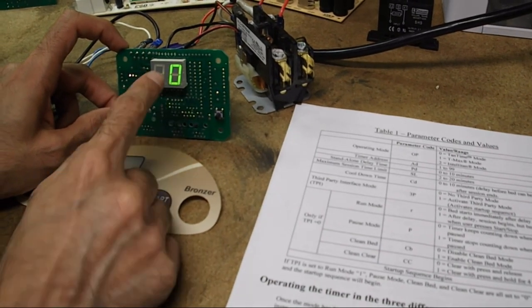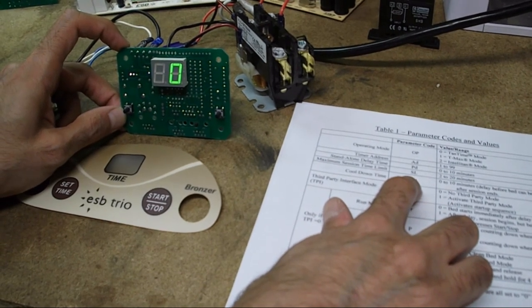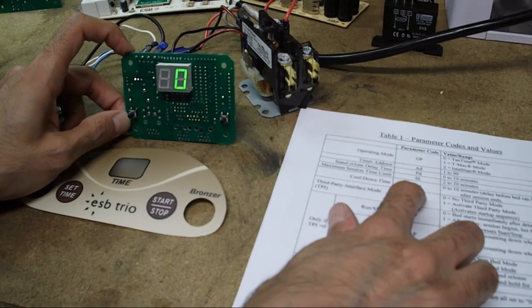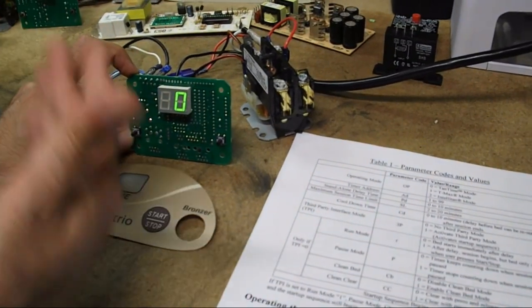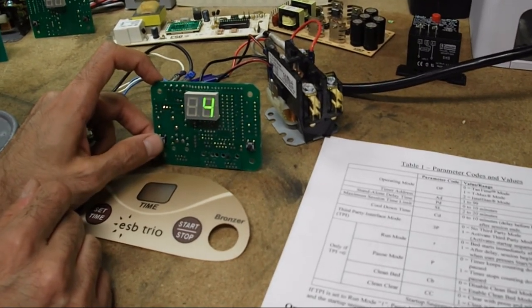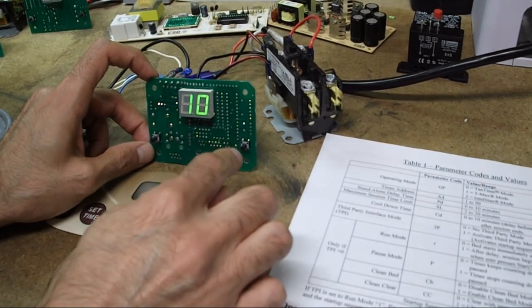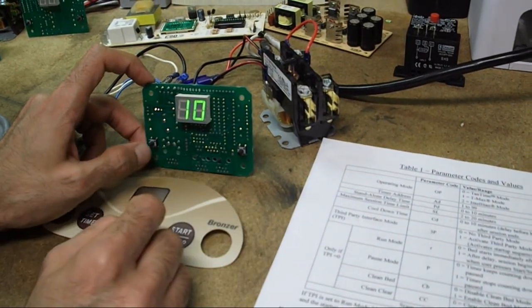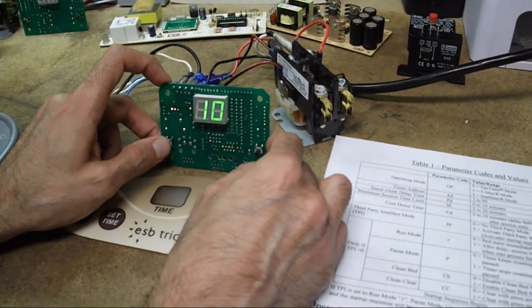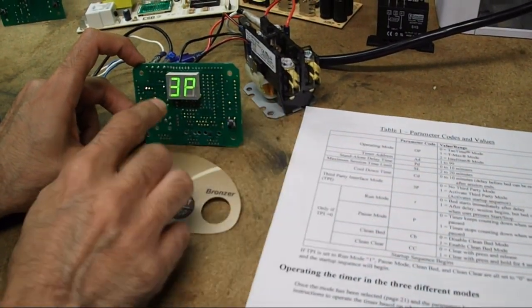CD and it's at zero. CD is the cool down time. That's the delay that is imposed upon the bed after the session ends before the next session can actually start. If you wanted to force a 10 minute cool down time, for instance, you could go here and set it to 10 and then you would hit start stop and then advance to the next parameter. I don't recommend necessarily having that, so I'm going to leave it at zero and I'm going to hit the start stop button and go to the next one.